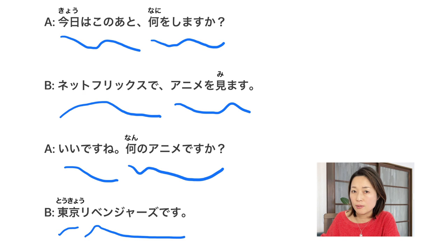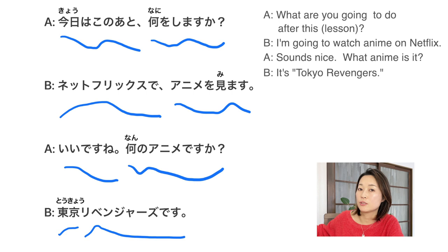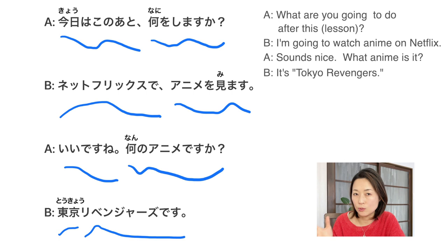Let me give you a quick explanation of this script. 「今日はこの後」 means 'today, after this.' 「何をしますか」 means 'What are you going to do?' — 「します」 in this case refers to a future action. Netflix is of course Netflix, and you can shorten it to 「ネトフリ」. 「アニメを見ます」 means 'I'm going to watch anime.' And 「いいですね」 — you can use 「いいですね」 when you hear something nice or good. 「何の」 means 'what,' so 「何のアニメですか」 means 'What anime is it?' And 「東京リベンジャーズです」 — Tokyo Revengers.